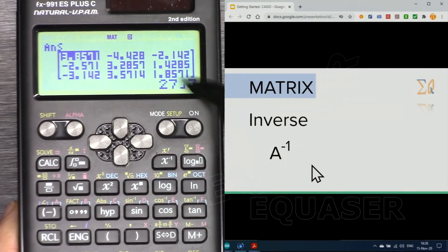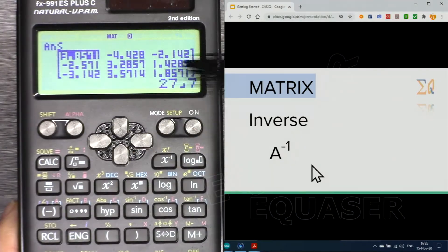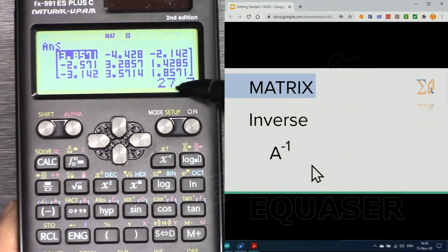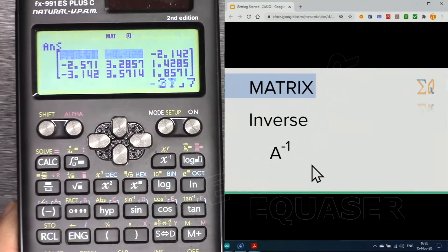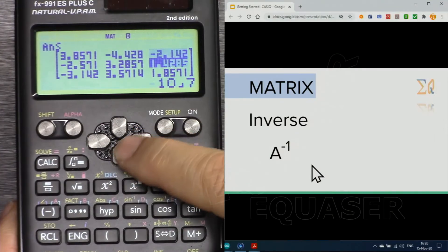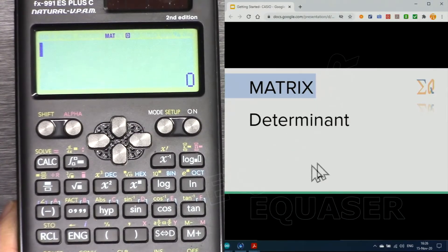And press equal. This is the inverse of the matrix and here are the decimal values. If you want exact value, 27 over 7, and move the cursor and see the values in each cell. All clear.